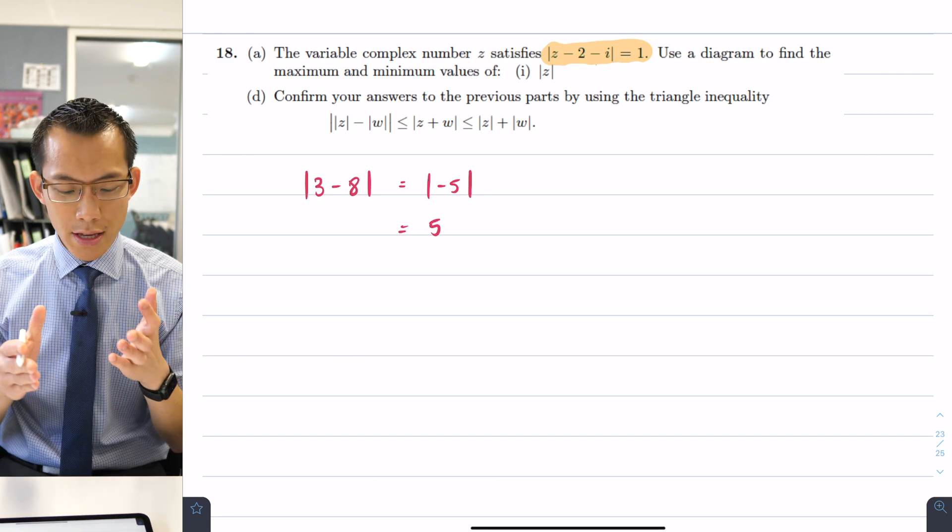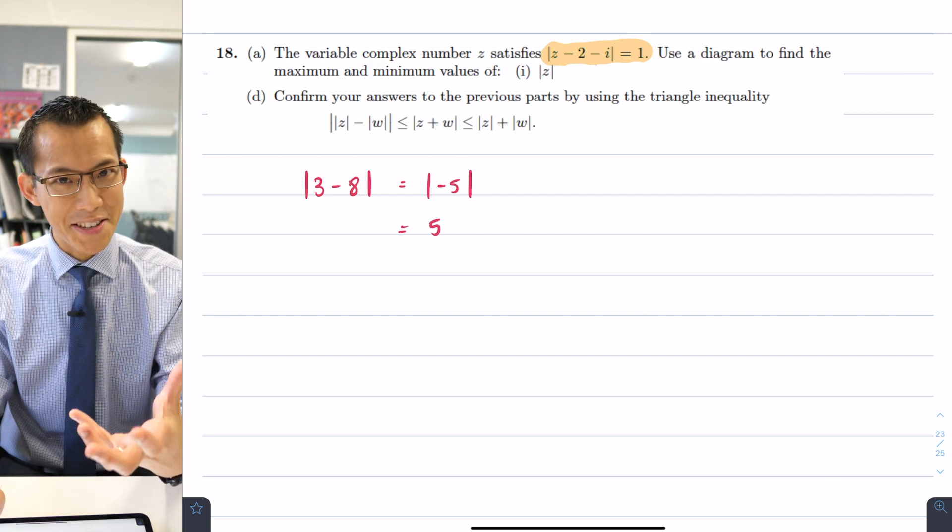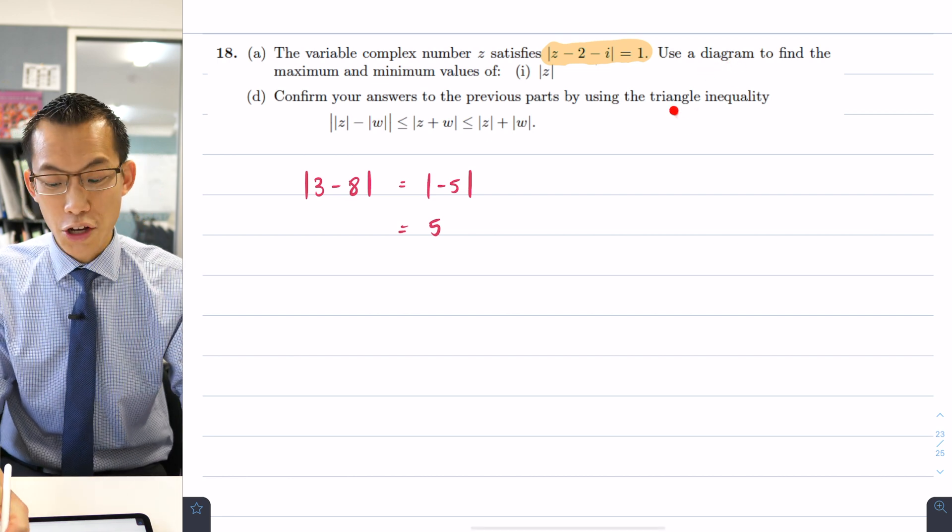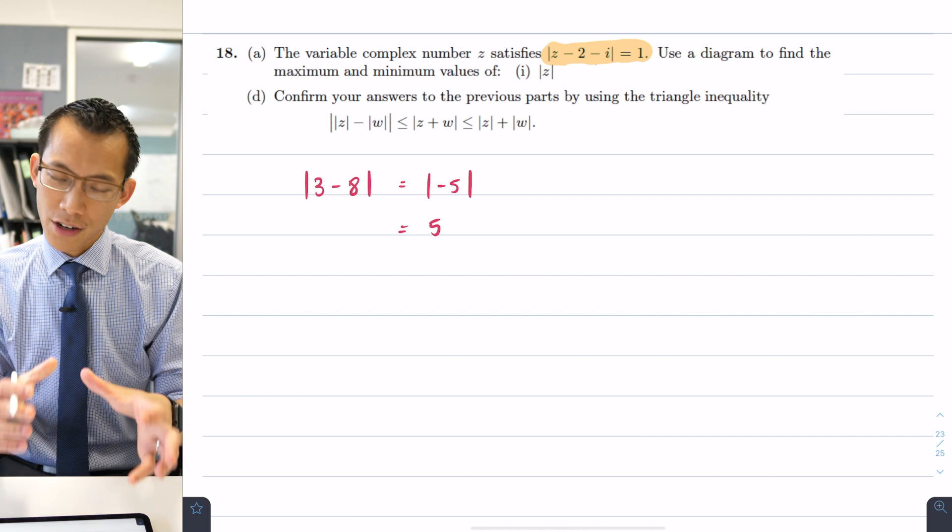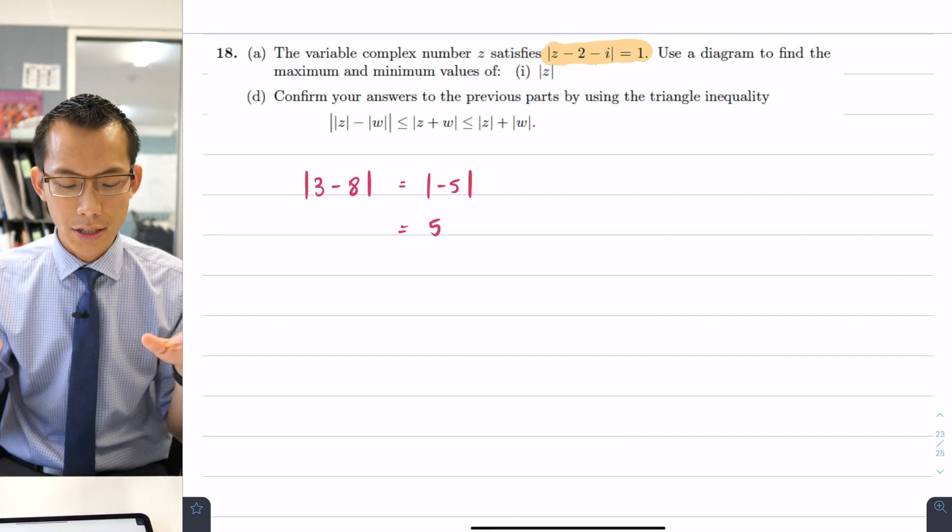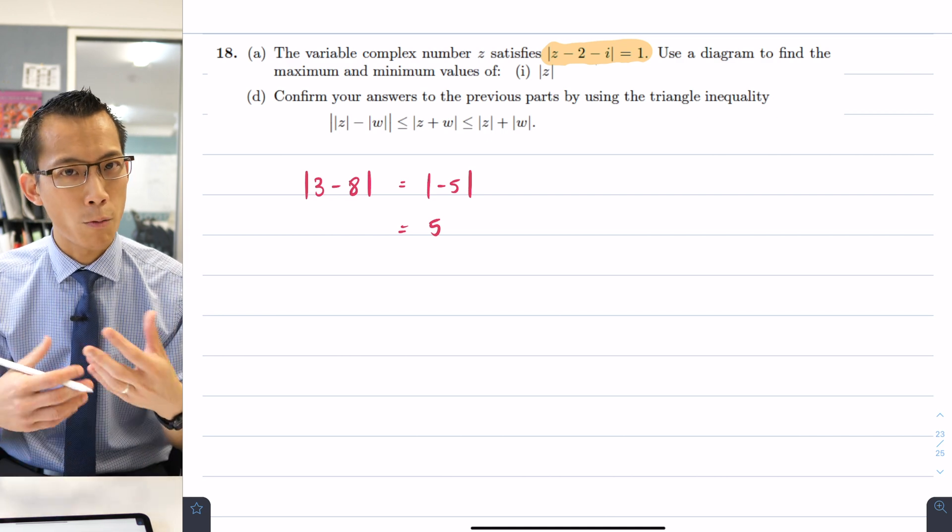However this is an arithmetic way of looking at things and you can see that the question itself tells you to use a diagram and there's this language like triangle inequality so actually a more useful way to think about absolute value and modulus in the context of this question will be visually, will be geometrically rather than just thinking about the arithmetic.